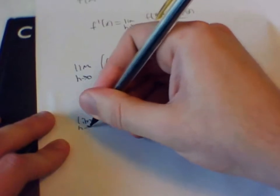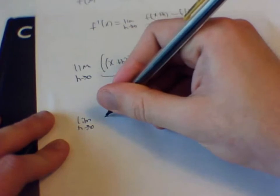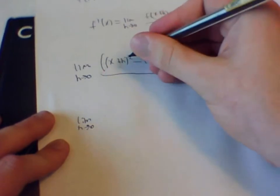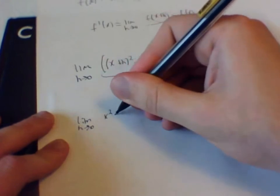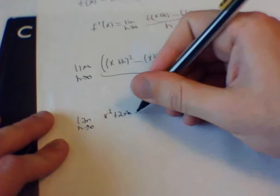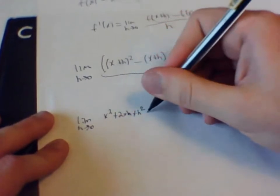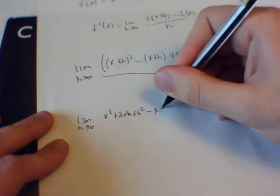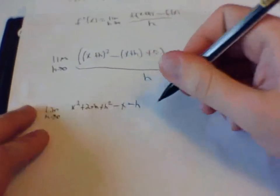The limit as h goes to zero. So we are going to get from that x squared, x plus h squared, we are going to get x squared plus 2xh plus h squared minus x minus h distributing the negative.